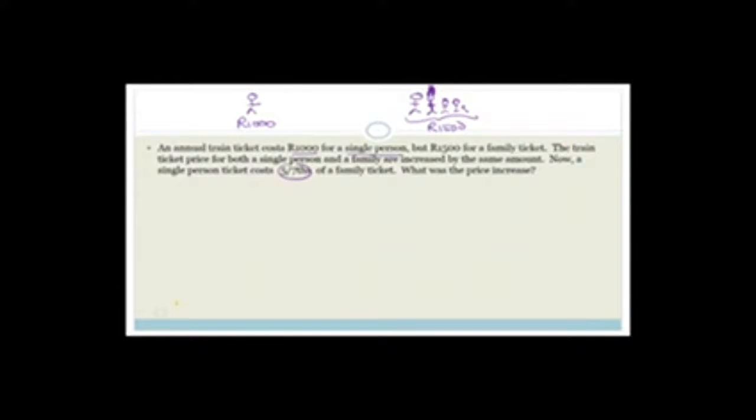So what I'm going to do is I'm going to let something be X, and I'm going to let X be the price increase. The price increase, I'm going to let